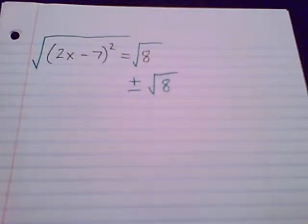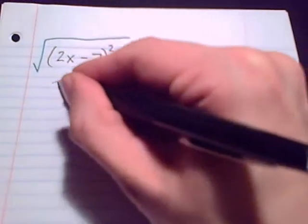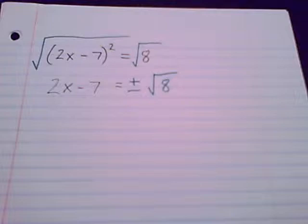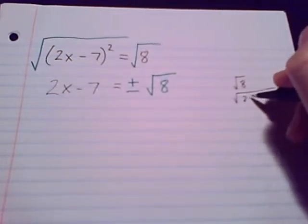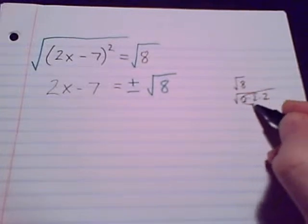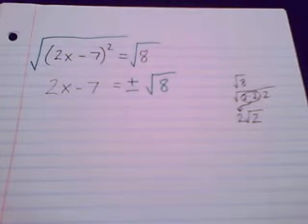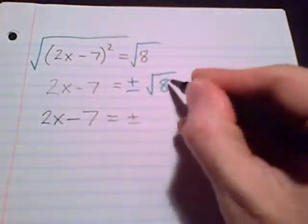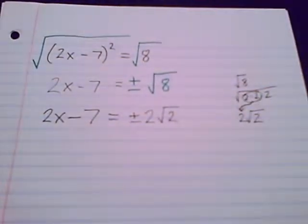We will want to simplify that radical 8. Working the left side, the square root and the square cancel, giving us 2x minus 7 equals positive or negative radical 8. Now let's simplify that radical. Radical 8 is 2 times 2 times 2 — we take out two 2's and have one 2 left inside the radical. So we have 2x minus 7 equals positive or negative 2 radical 2.